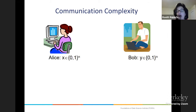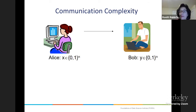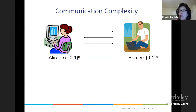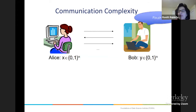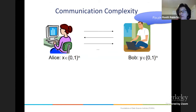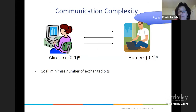This is the model where there's somebody named Alice and somebody named Bob, and they each have an input. They want to talk and compute some function — the function that depends on both of their inputs. The question is: how much communication do they have to have so that they both know the answer to f of xy?